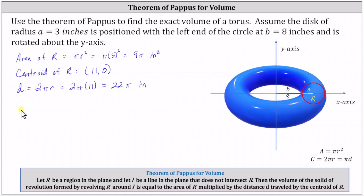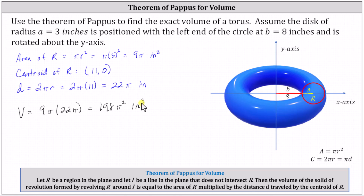Now we can determine the volume. The volume of the torus is equal to the area of R times the distance D, which gives us nine π times twenty-two π, which equals exactly 198π² cubic inches. The question does ask for the exact volume. Just in case you're curious, the approximate volume is 1,954.18 cubic inches. I hope you found this helpful.